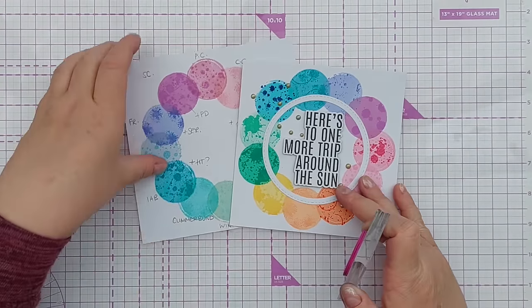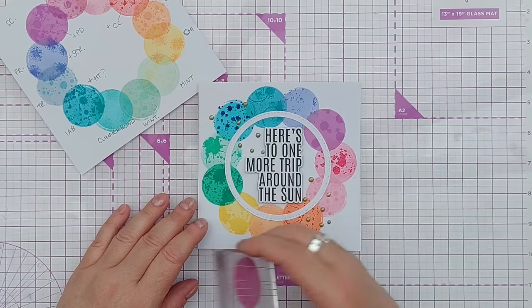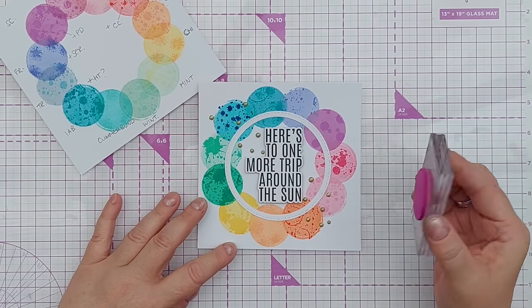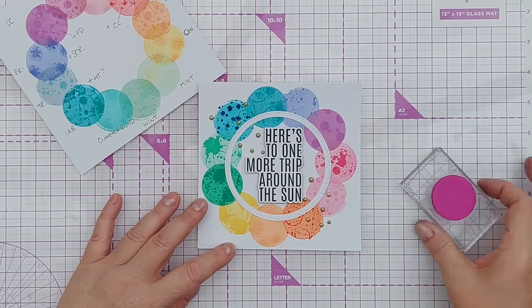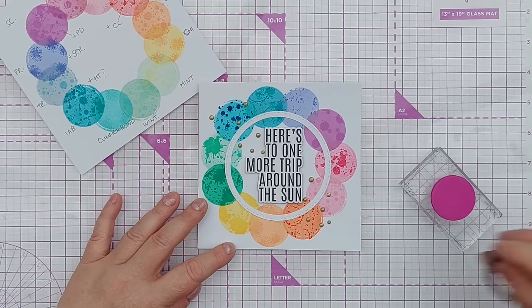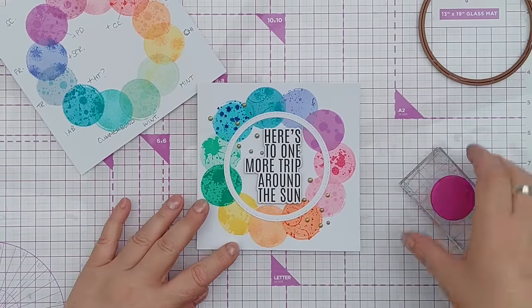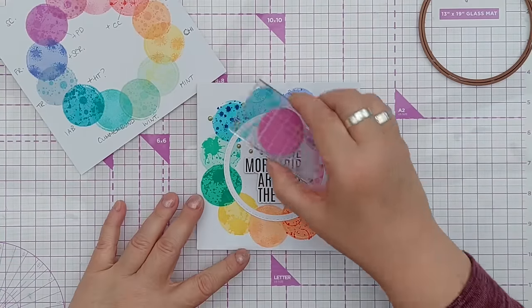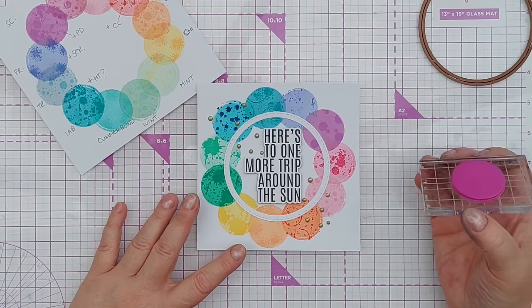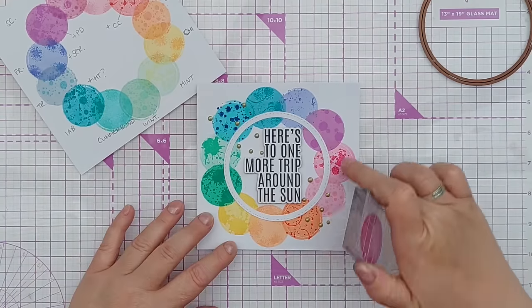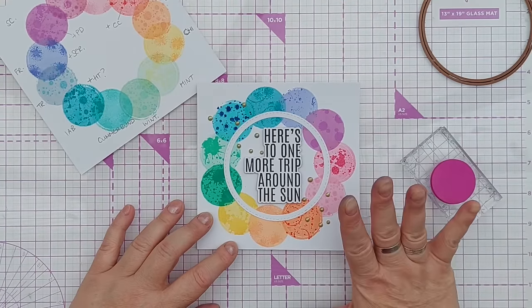The next thing I did was I thought I will stamp these in a circle as we're using circles and I'll try getting a whole rainbow all the way around. So I took this circle die, drew around the outside with a pencil to give me a guideline and then I got my Catherine Pooler inks and tried to stamp a whole rainbow all the way around the outside. I managed to get 11 circles around there.